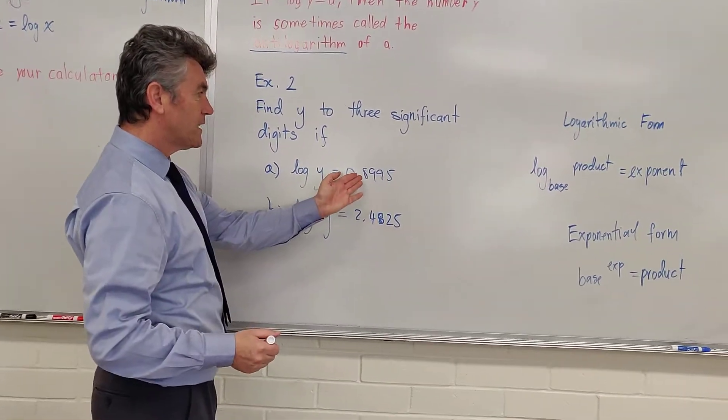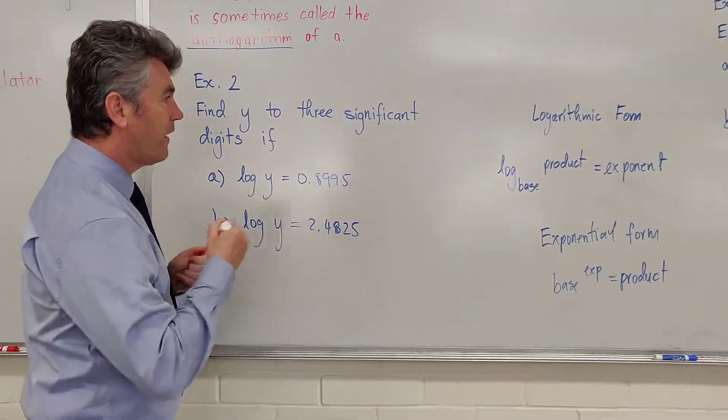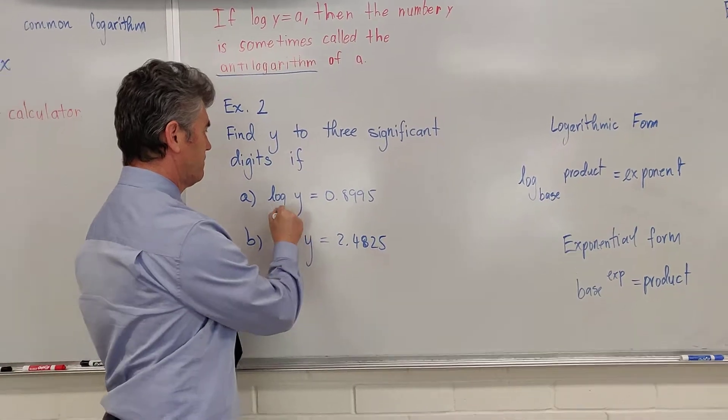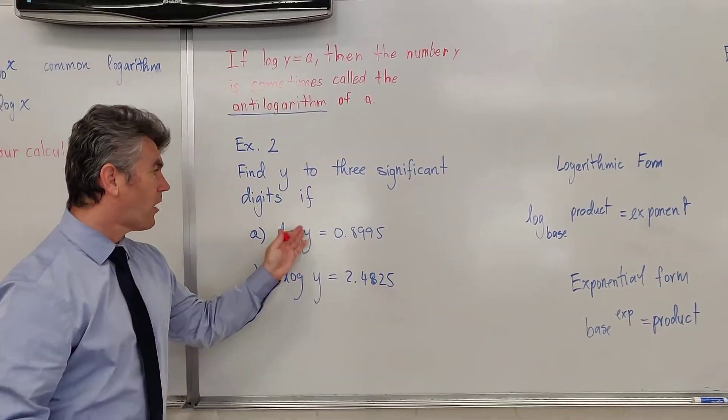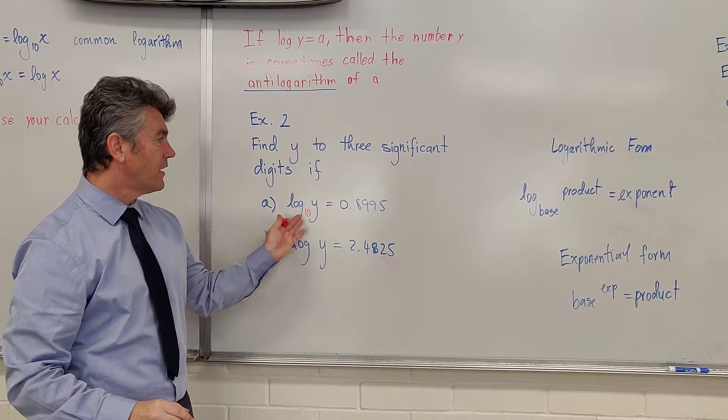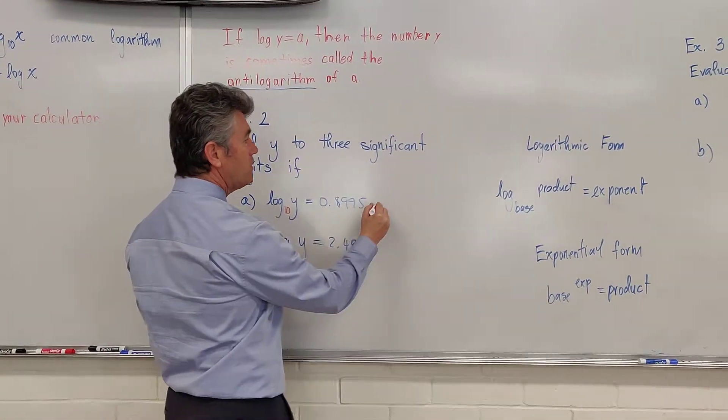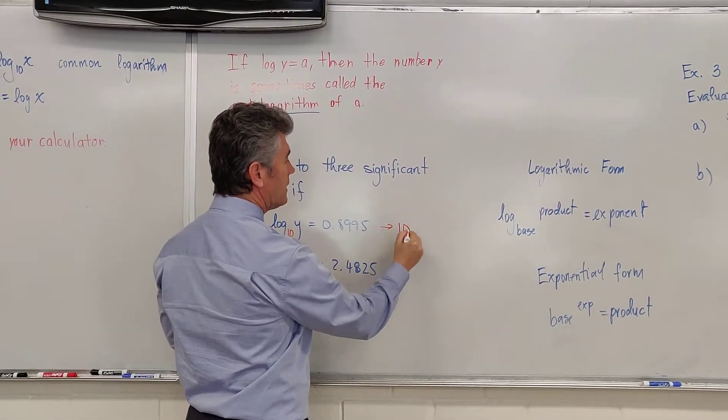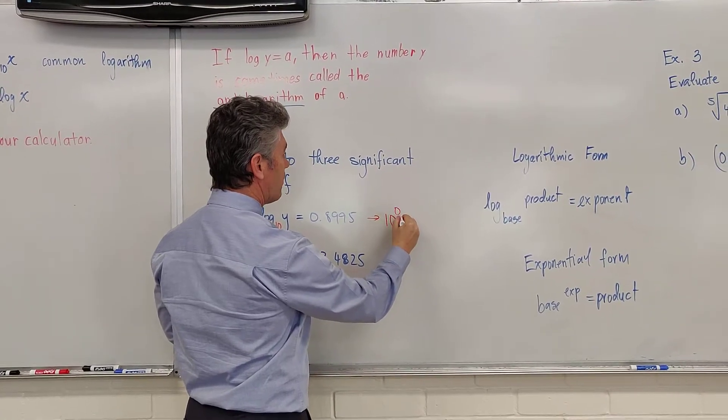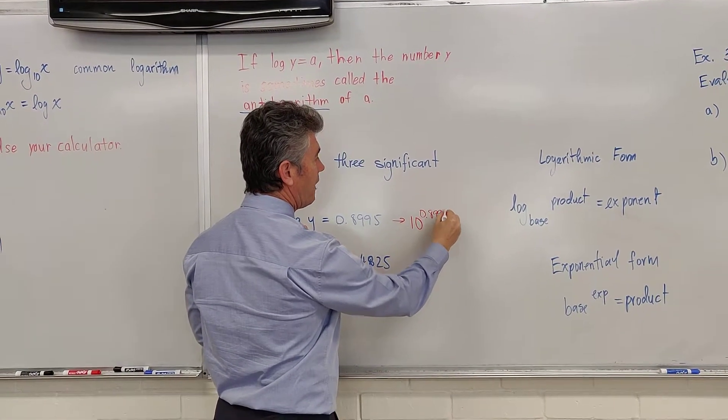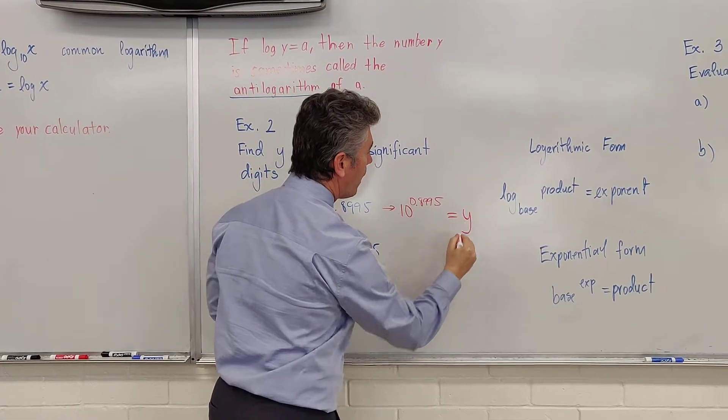We have log y equals 0.8995. This is really log y with a base of 10 in logarithmic form. Change it to exponential form: 10 raised to the power of 0.8995 equals y.